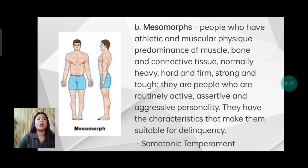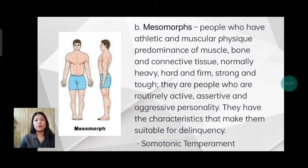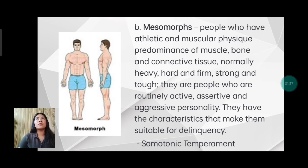Second are mesomorphs. People who have an athletic and muscular physique, with predominance of muscle, bone, and connective tissue — normally heavy, hard, firm, strong, and tough. They are people who are routinely active, assertive, and aggressive in personality, and have characteristics that make them suitable for delinquency. They also have large bones, solid torso combined with low fat, and wide shoulders with a narrow waist — somatotonic temperament. With this temperament, they are active, dynamic, and assertive, with a tendency toward aggression.